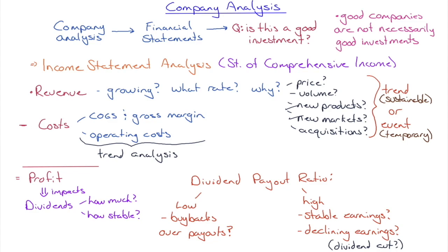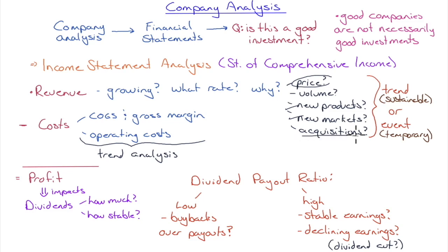Starting with the income statement: revenues minus costs equals profit. For revenues, we want a trend of growing revenue over time — but the key question is why it's growing. If growth comes only from price increases while volume is stable or declining, that's not sustainable. Sustainable growth comes from volume growth, new products, entering new markets. We want to know if the revenue growth rate is a sustainable trend or just a temporary event.